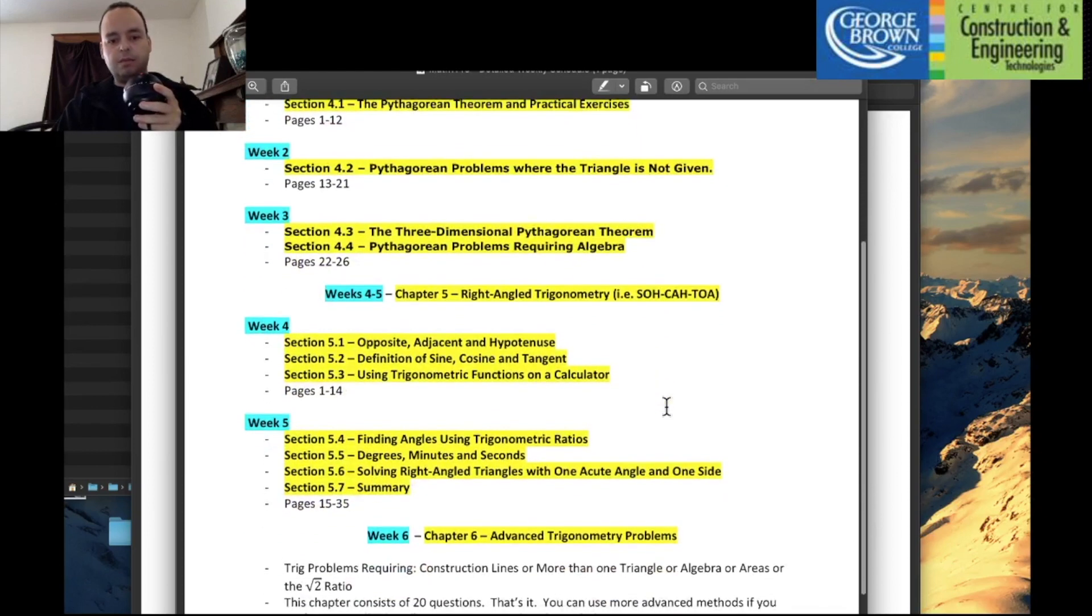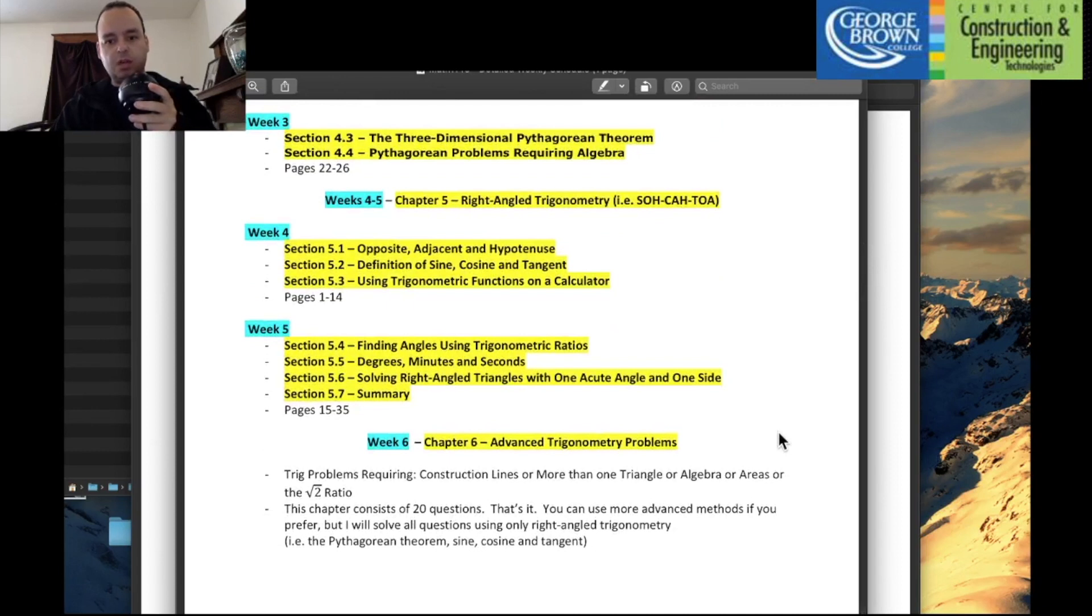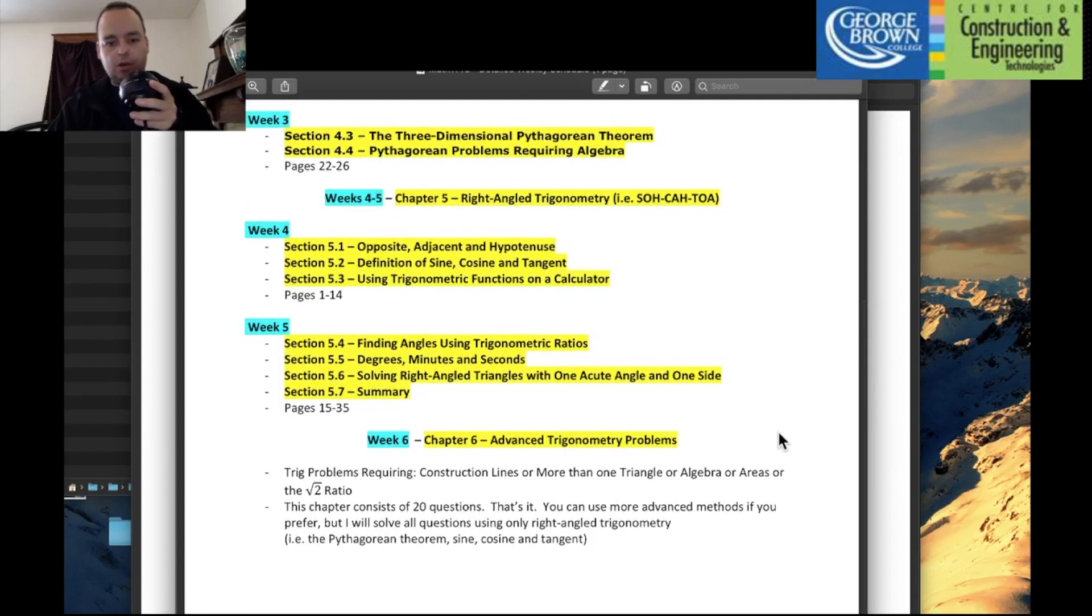In weeks 4 and 5, I'll start talking about sine, cosine, and tan, still working with right-angled triangles, and I'll split that material over two weeks. In week 6, our last week together, prior to you switching over to the other professor, I will be covering a short chapter called Chapter 6, which will deal with 20 tougher questions.